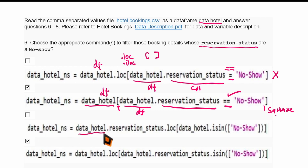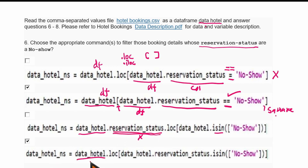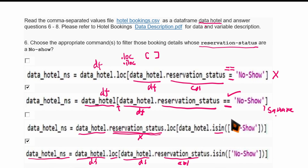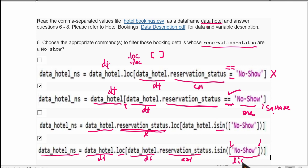The third option incorrectly puts the column name with dot notation inside .loc — not correct. The fourth option uses .loc indexing with .isin() to search for 'No-Show'. The difference between double equals and .isin() is that double equals can compare only one value, while .isin() accepts a list of values, allowing multiple values to be compared and matching rows returned as a DataFrame.